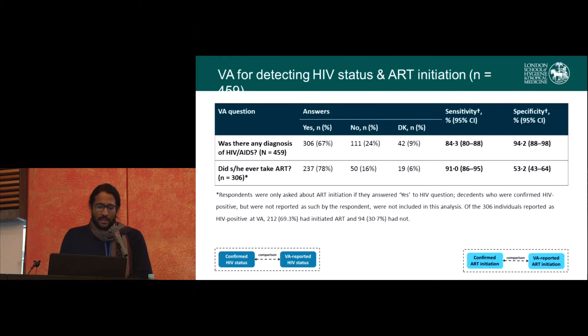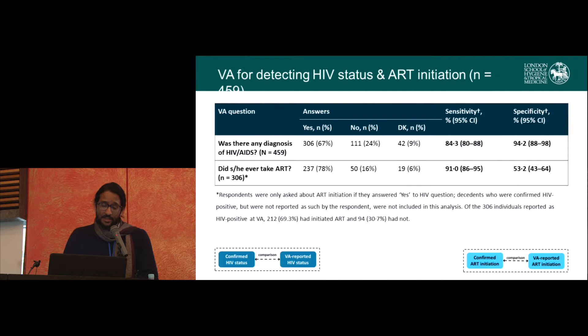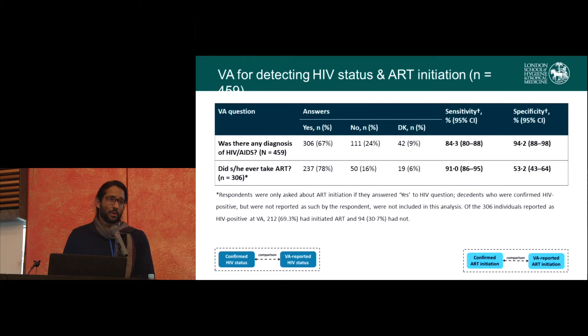Looking at our first objective — detecting HIV status — the verbal autopsy question was 84% sensitive and 94% specific. This is similar to other studies, and the sensitivity has improved over the last few years, which we think is primarily due to reductions in stigma: people are more willing to talk about being HIV-positive or their loved one having been HIV-positive. There has also been improved access to testing, so more people are aware of their status before they die.